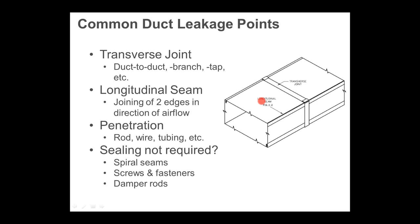Another significant leakage source is people penetrating ductwork to run their own things — data cabling especially. It happens more residentially but still occurs commercially. People poke a hole in the side of the duct, run data cable through it, and poke it back out the other side — not something allowed by most fire or electrical codes, but it happens. For spiral ductwork, you generally won't need to seal the spiral itself — it's pretty tight on its own. You just need to seal the connection points where one piece of pipe connects to the next.